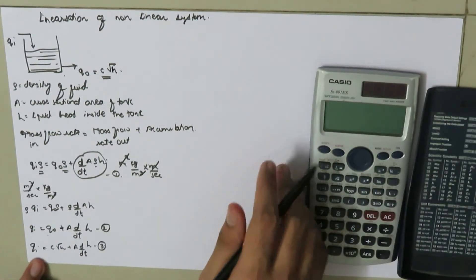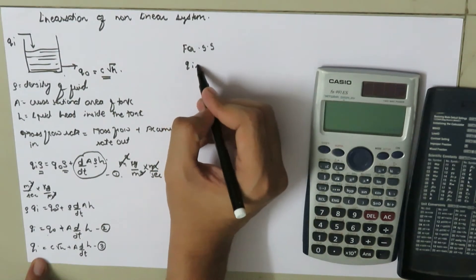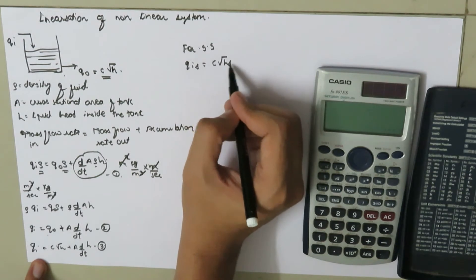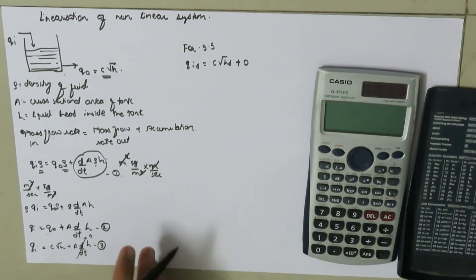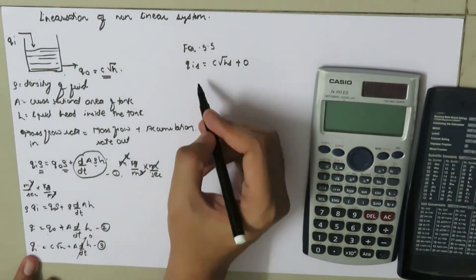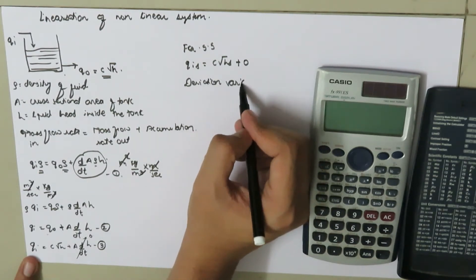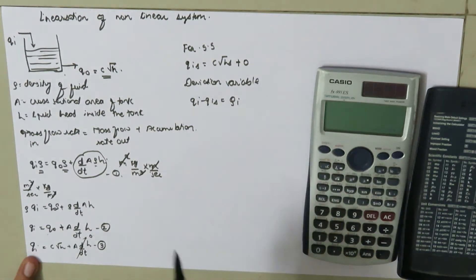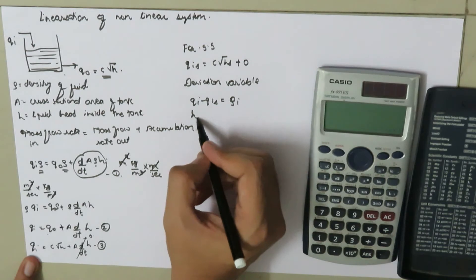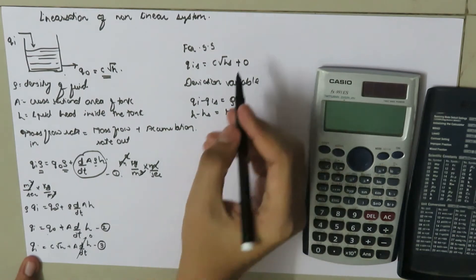At steady state, Q_i_s equals C·√H_s, because the derivative term goes to zero. Introducing deviation variables: capital Q_i equals Q_i minus Q_i_s, and capital H equals H minus H_s. This is equation number four.